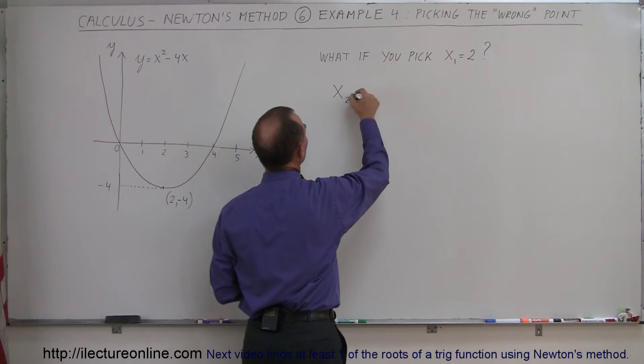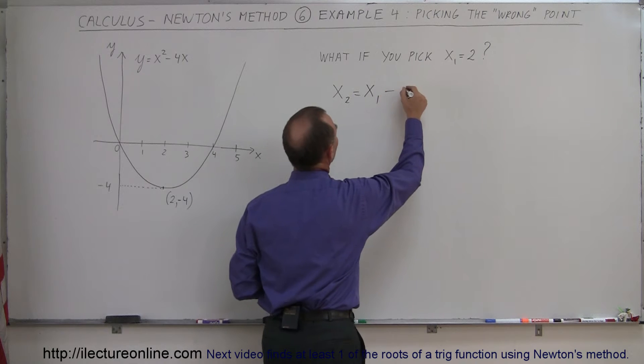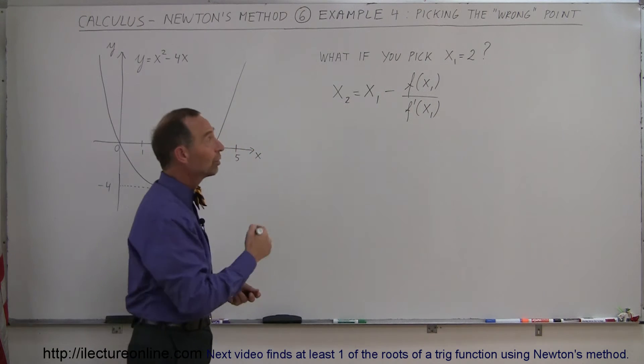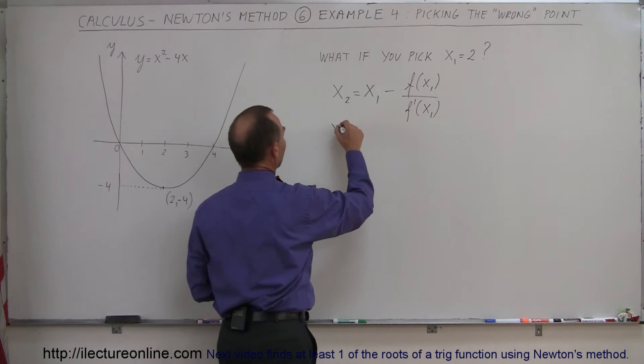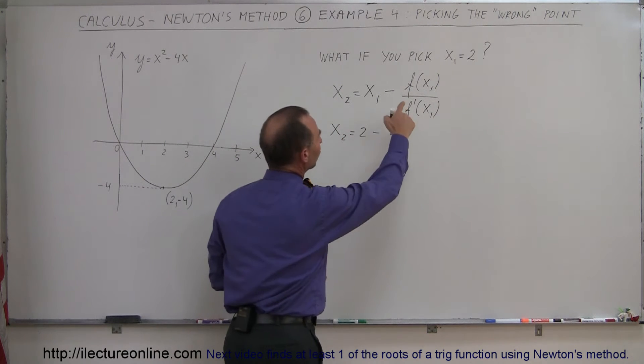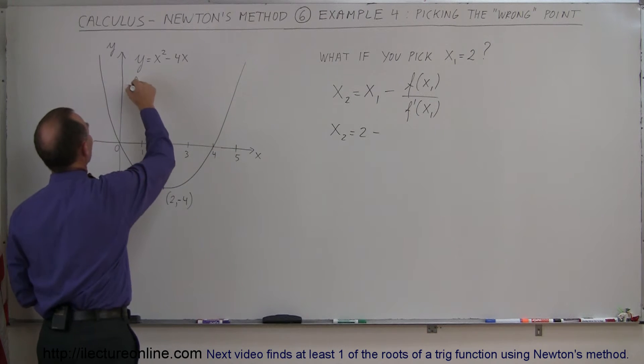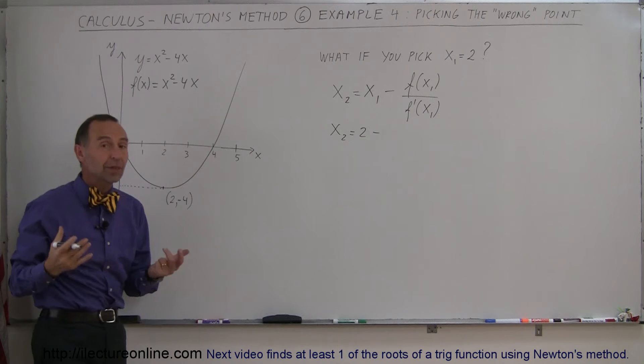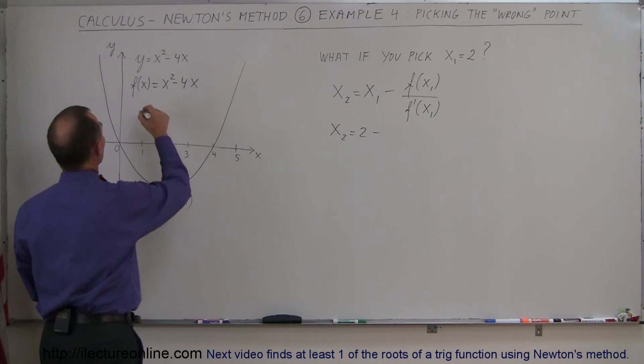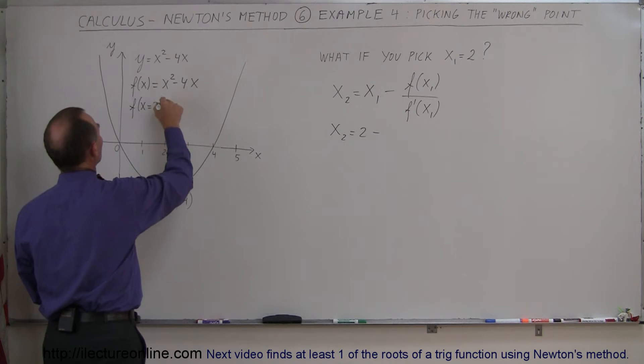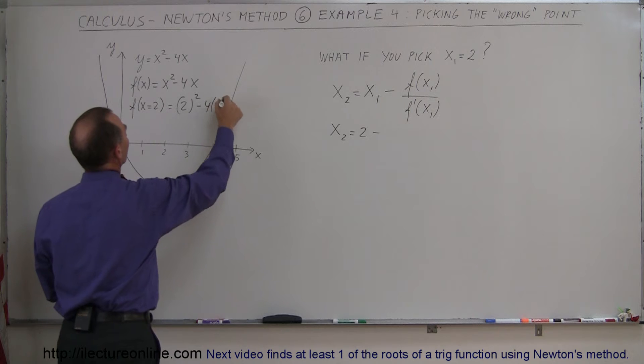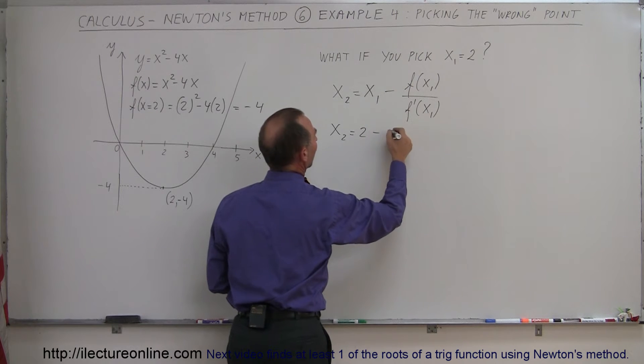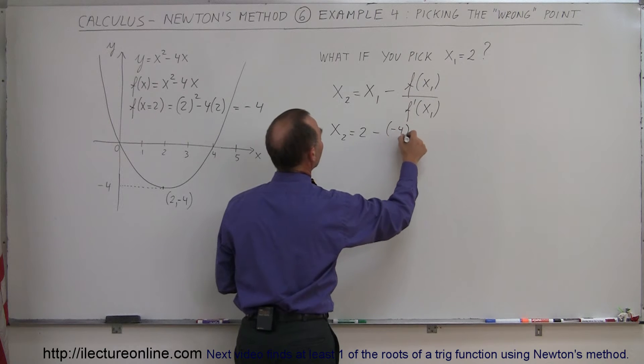Newton's method says that the next point, x sub 2, is equal to the first point that you picked minus the function evaluated at your first point divided by the derivative of your function evaluated at the first point. So let's try that with this particular example. So therefore, you're going to say that x sub 2 is going to be 2 minus the function evaluated at that point. So here we have our function, f of x is equal to x squared minus 4x. And sure enough, in this case, y and f of x is really the same thing. If you evaluate that for x equals 2, we get 2 squared minus 4 times 2, which is equal to 4 minus 8, which is minus 4. So the function evaluated at x sub 1 is minus 4 divided by...